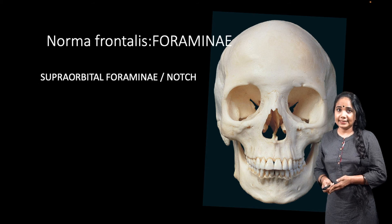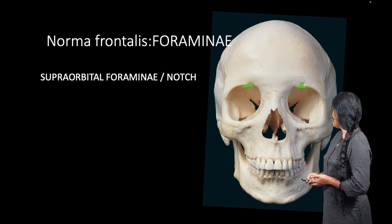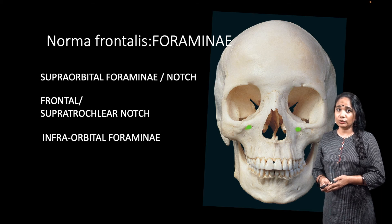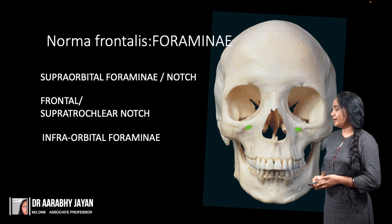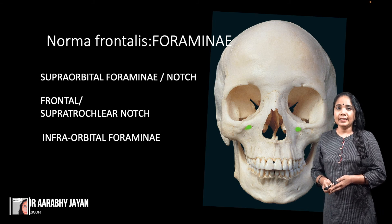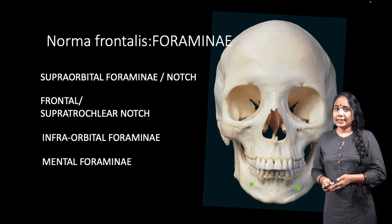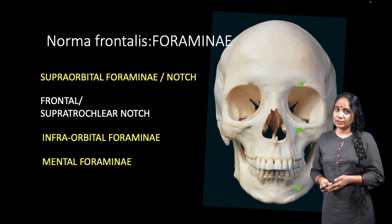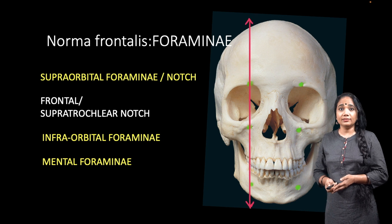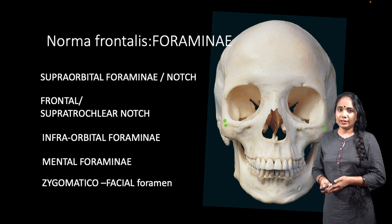The foramina seen in the norma frontalis include the supraorbital foramen or notch, which lodges the supraorbital nerves and vessels. The frontal or supratrochlear notch is seen slightly medial to the supraorbital notch. Below the orbit we have the infraorbital foramen, which allows passage of the infraorbital vessels and nerve. In the mandible we can see the mental foramen, through which pass the mental nerves. Notably, the supraorbital foramen, infraorbital foramen, and mental foramen all lie in the same vertical line — an easy way to remember them. We also have the zygomaticofacial foramen in the zygomatic bone.